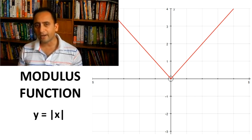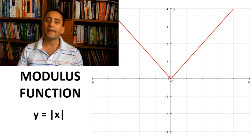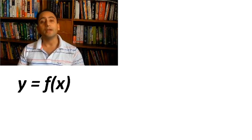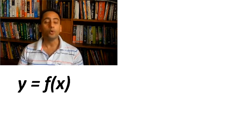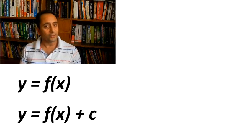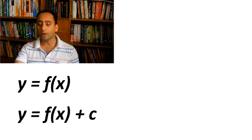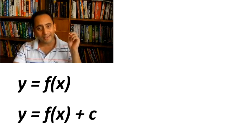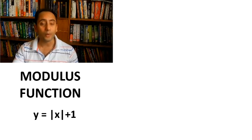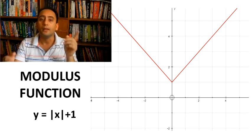In addition to these graphs, I shall also discuss certain transformations. If y = f(x) is a given graph and the equation is transformed to y = f(x) + c, the graph will shift vertically upward by c units, provided c is positive. For example, if instead of y = |x| we have y = |x| + 1, the graph will shift vertically upward by 1 unit.